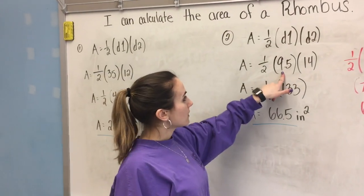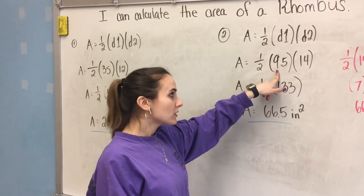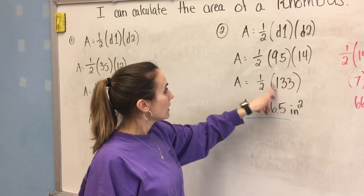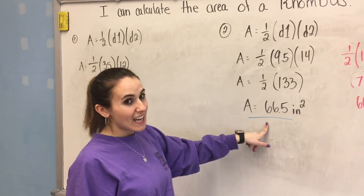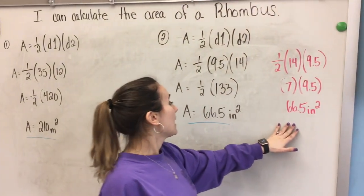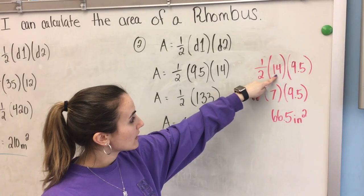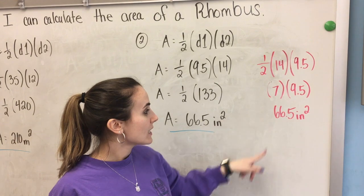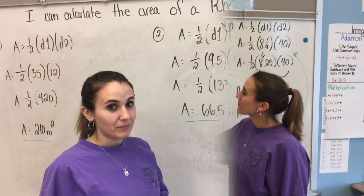Number 2, he plugged in his diagonals. Now remember we have 9.5 here, which could be a little challenging. And we have 14. He multiplied the two together first. He got 133. He brought down his half. Half of 133 is 66.5 inches squared. Now not only did he do it this way, but he also did it another way and he put his 14 first. So what he did was half of 14 was 7. He brought down his 9.5 and 7 times 9.5 is 66.5 inches squared, which still gives us the same answer.